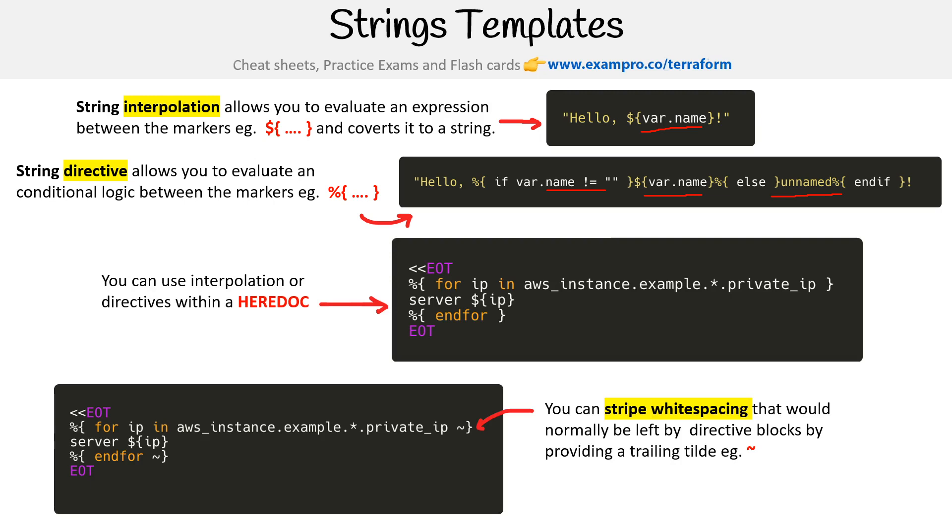And then the last thing here is you can strip out white space that would normally be left by directive blocks by providing a trailing tilde. So just notice this little tilde here on the end, because these do take up a space. So if you were to view it, there'd just be an empty space there. If you want that space to vanish, you just put that tilde on the end. So there you go.